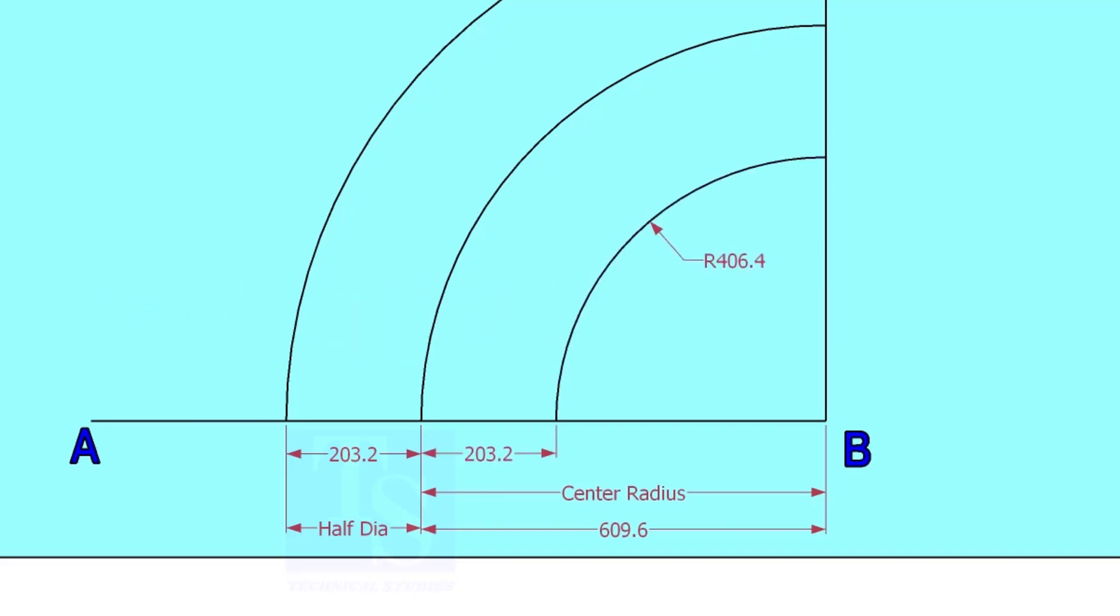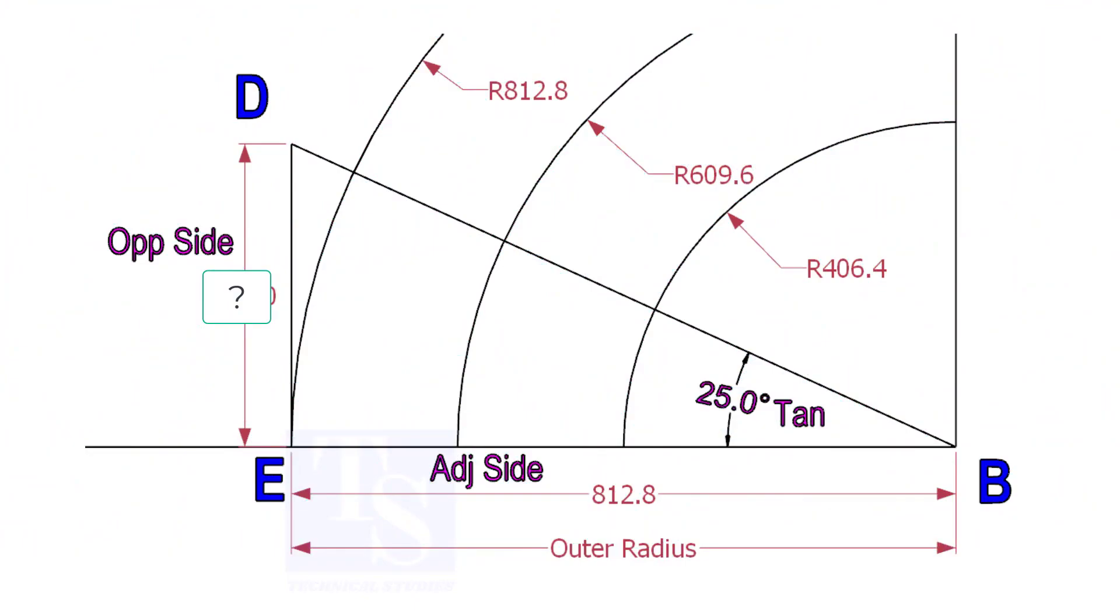Mark the half OD arcs on both sides of the center line. Mark a line 25-degree rotated from the base line AB.